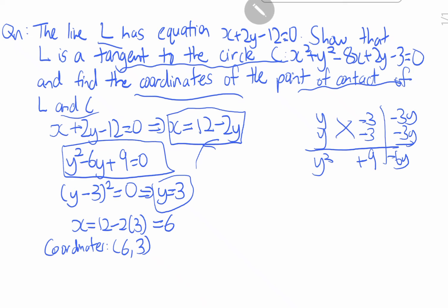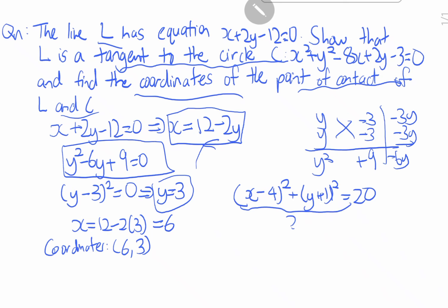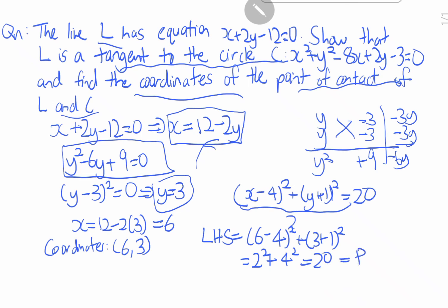Let's verify using the standard form of the circle equation from earlier: (x minus 4)² plus (y plus 1)² equals 20. Substituting the point (6, 3): left-hand side equals (6 minus 4)² plus (3 plus 1)² equals 2² plus 4² equals 4 plus 16 equals 20, which equals the right-hand side.